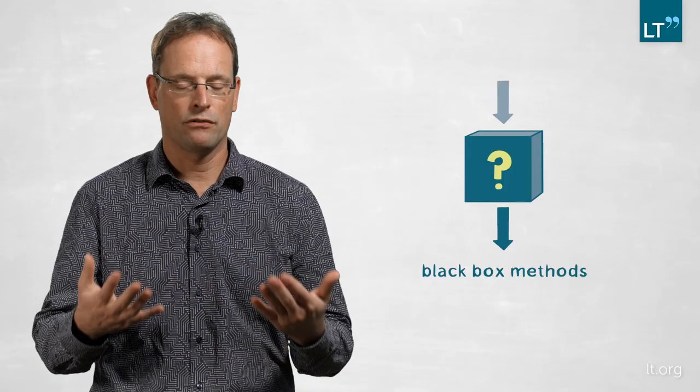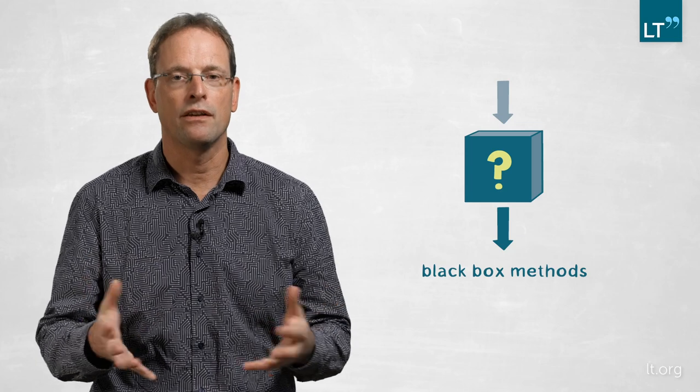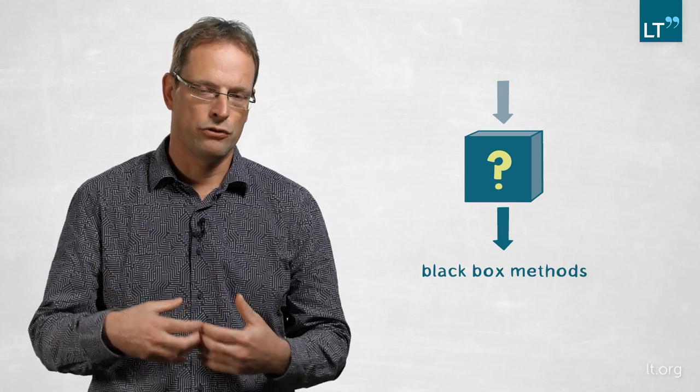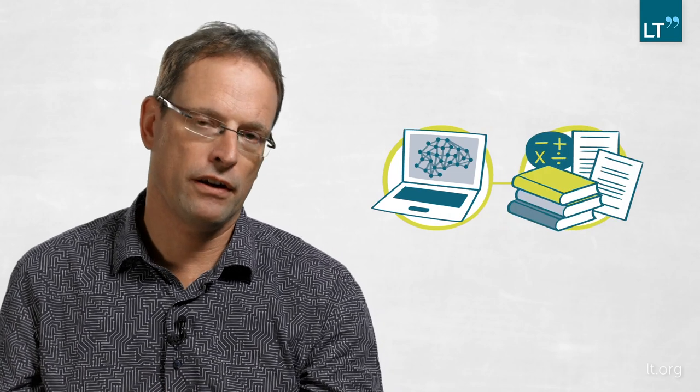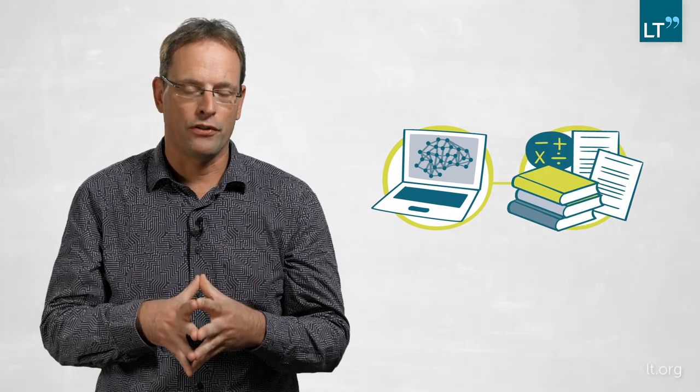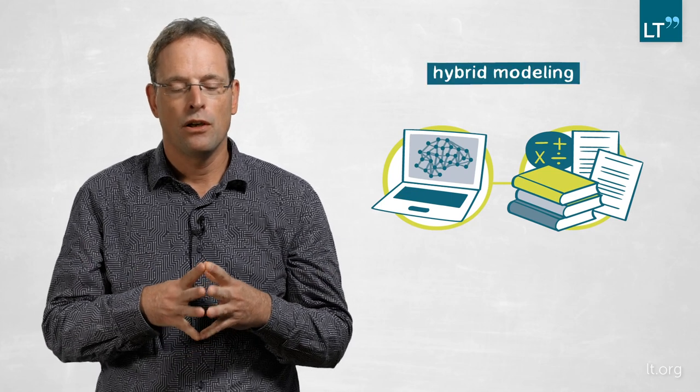So they can produce physically totally implausible results and they can also produce results which are hard to explain because these methods are also usually black box methods. And so it's a big challenge to understand why deep learning methods actually do certain predictions and not others. So what we think is important to do research on combining these deep learning approaches or machine learning approaches in general with physical modeling. On the other hand, to combine the best of both worlds, we call that hybrid modeling approaches.